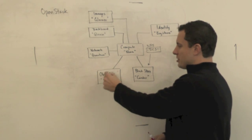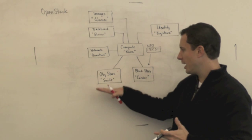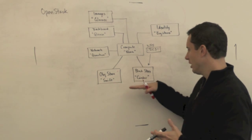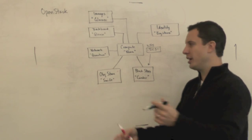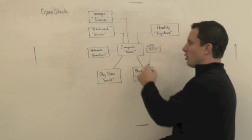The object storage is still done in the project called Swift. So we've got object storage can be its own thing. Cinder can be its own thing. And then we're seeing vendors who can do both of them. And they'll talk to each through the appropriate API.